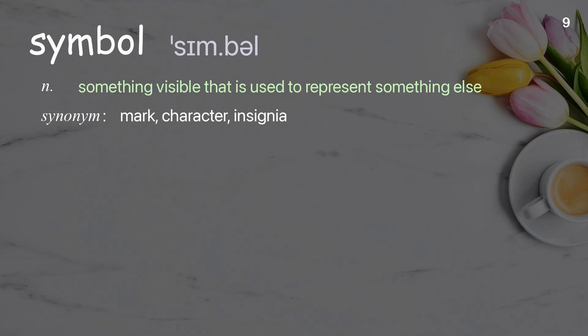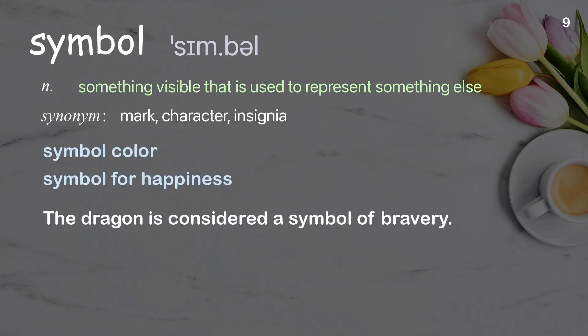Symbol: Something visible that is used to represent something else. Examples: Symbol color. Symbol for happiness. The dragon is considered a symbol of bravery.